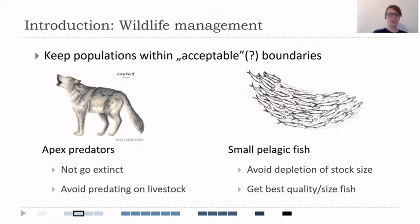If we consider apex predators, we don't want them to go extinct—we want to protect them. But we also want to avoid unnecessary interaction with humans, like their predation on livestock. On the other hand, if we consider small pelagic fish, we want to avoid depletion of stock size, but at the same time we want to get the best quality and size of the fish we're catching.